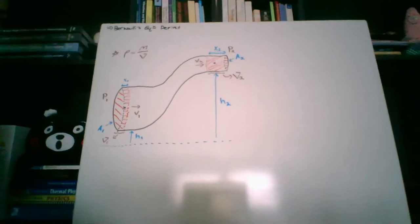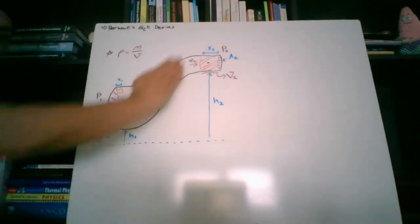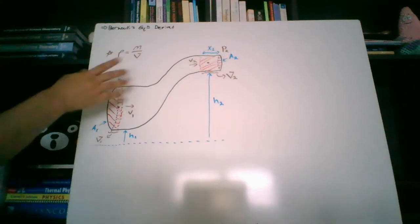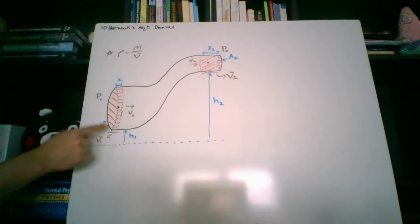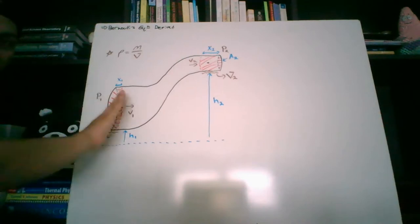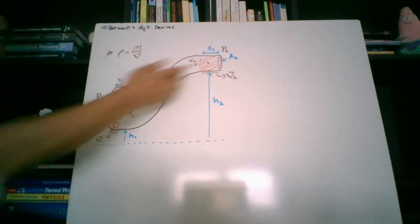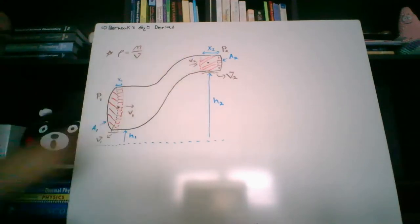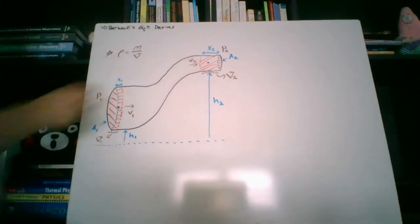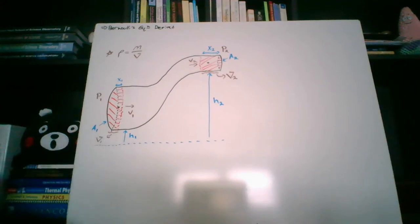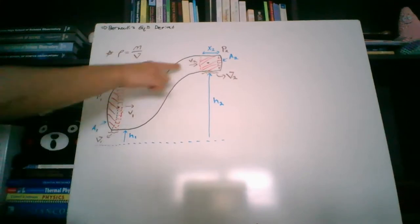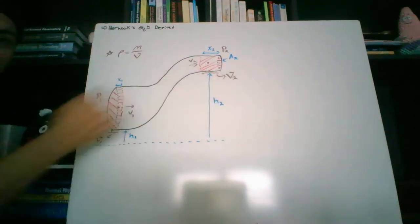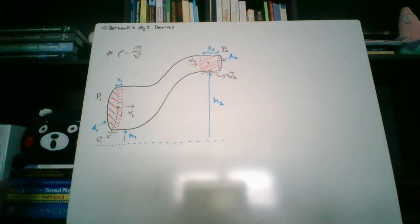What we have is a pipe moving this way and then going up in height. The volume, cross-sectional area, and thickness — well, the volume here and the volume there are going to be identical, because however much volume you push this way has to be pushed that way. The cross-sectional areas are going to be different, so the x values are also different. The V with a little dash mark stands for volume; the V without it is speed or velocity.